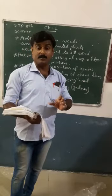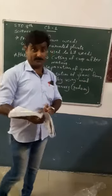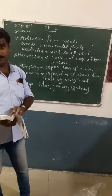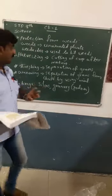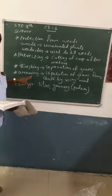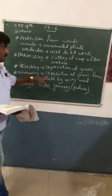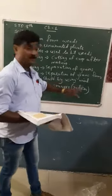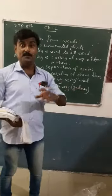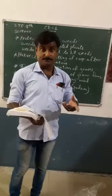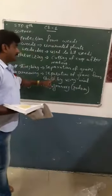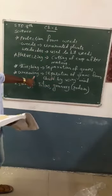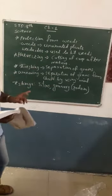Nowadays, for threshing, threshing machines are used. The natural method is winnowing. Winnowing is the separation of grains from chaff by using wind. The wind separates the grains from the chaff, and this process is called winnowing.